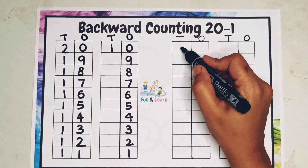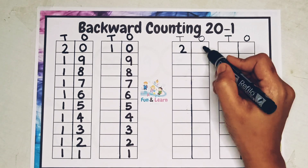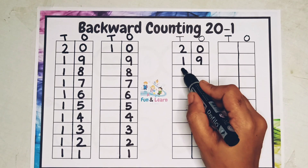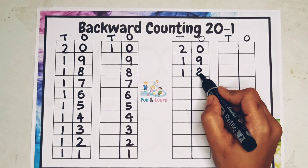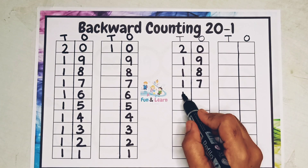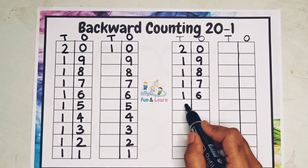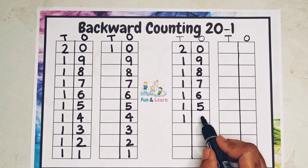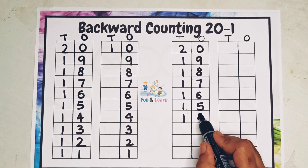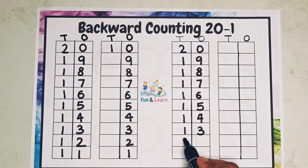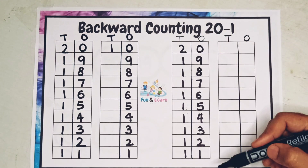Let's do it once more: 20 has 2 tens 0 ones, 19 has 1 ten 9 ones, 18 has 1 ten 8 ones, 17 has 1 ten 7 ones, 16 has 1 ten 6 ones, 15 has 1 ten 5 ones, 14 has 1 ten 4 ones, 13 has 1 ten 3 ones, 12 has 1 ten 2 ones, 11 has 1 ten 1 one. Now what is backward counting?